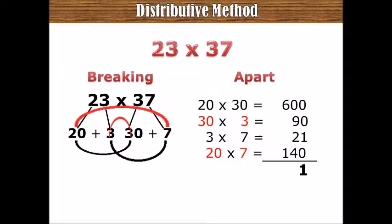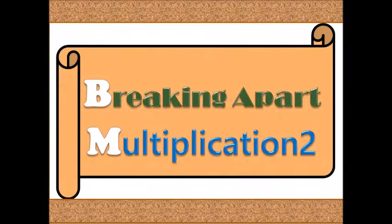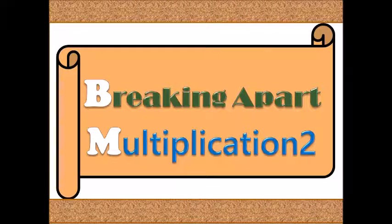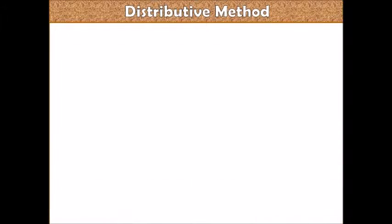Then you sum up your answer. So when you add them up you have 851. 0 plus 0 plus 1 is 1, so you have 851. Then breaking apart 2, example 2.